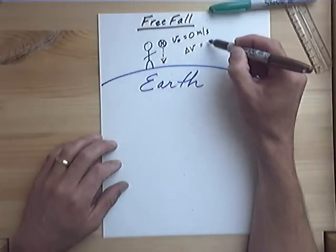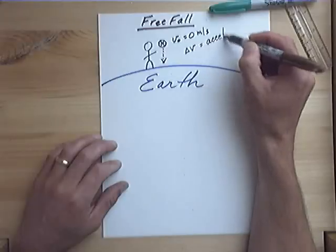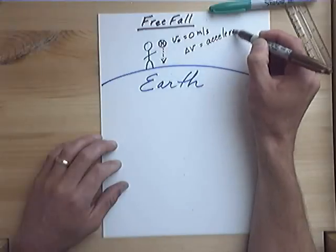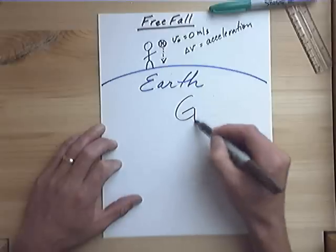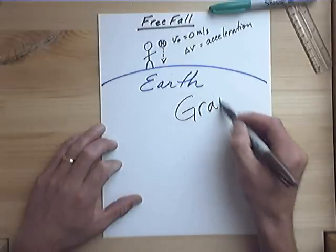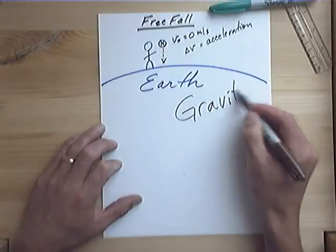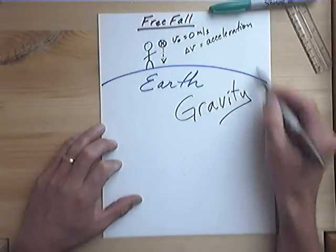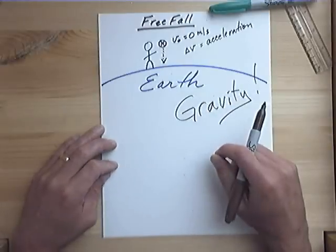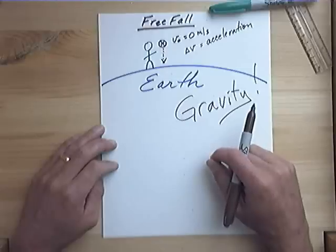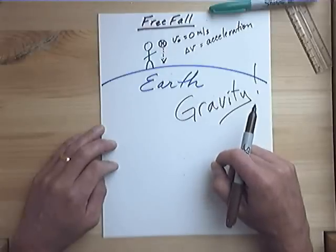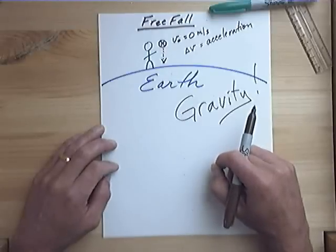Changing velocity is acceleration. What caused that acceleration? Gravity. Now, we want only gravity to be the thing that is accelerating this.